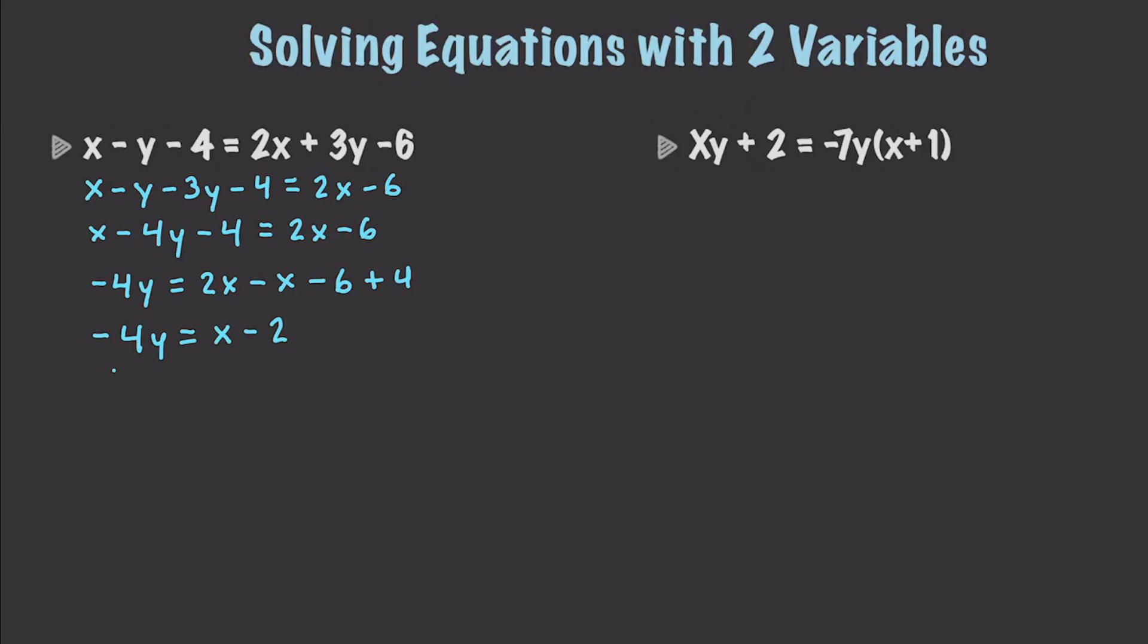We can divide by negative 4 for every single value. I'll show it to you just so you can see. So this is going to be negative 4 and negative 4 and negative 4. And whenever we solve for y, that gives us a final answer of y is going to be equal to negative 1 fourth x plus 1 half. Let's solve one more.